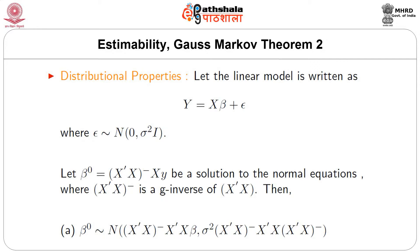Here we have written y with a capital notation; sometimes we also write it using a lowercase notation. Let beta-naught equal to (X-transpose X) g-inverse X-transpose y be a solution to the normal equations, where (X-transpose X) g-inverse is a generalized inverse of X-transpose X. Then A beta-naught follows a Normal distribution with a certain mean and covariance term sigma-squared (X-transpose X) g-inverse X-transpose X (X-transpose X) g-inverse.